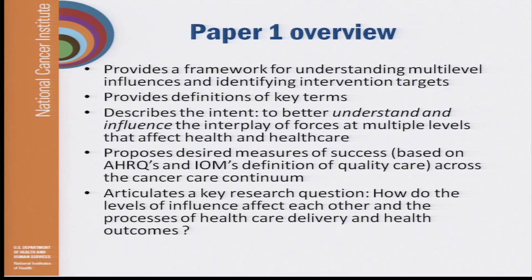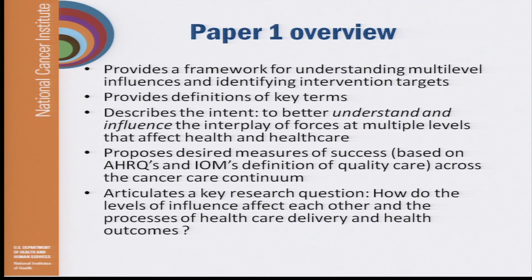In the first paper, the authors provided a framework for understanding multi-level influences and identifying intervention targets, and importantly provided some definition of key terms. The intent is both to better understand and to influence the interplay of forces at these multiple levels. Paper 1 also proposed desired measures of success based on AHRQ's and IOM's definition of quality of care across the cancer continuum, and articulated a key research question: how do the levels of influence affect each other and the processes of health care delivery and health outcomes?